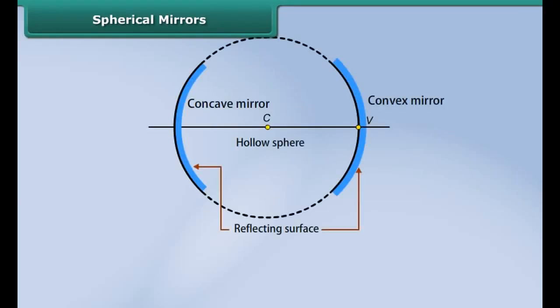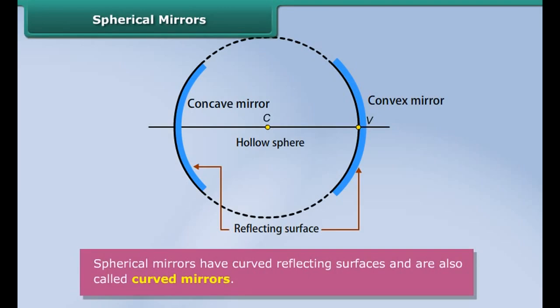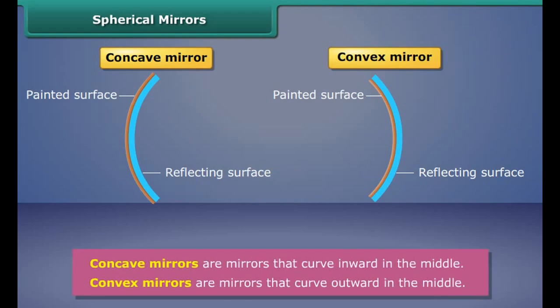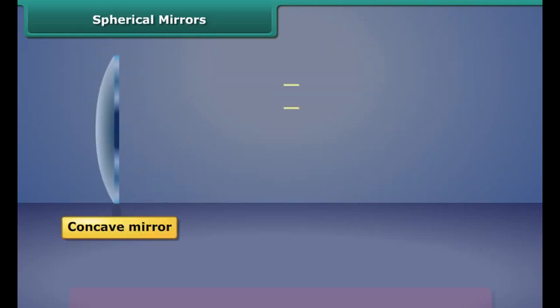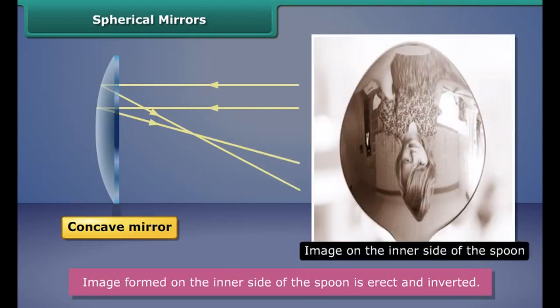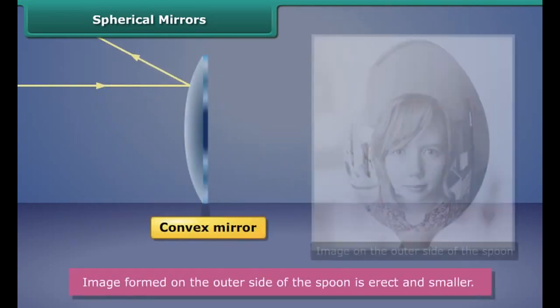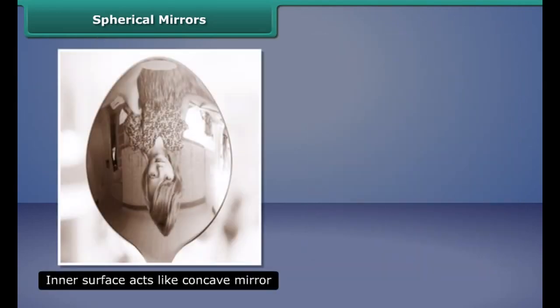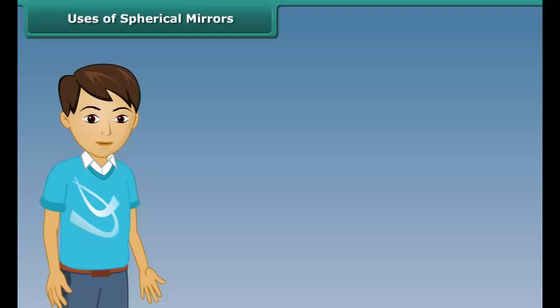Spherical mirrors have curved reflecting surfaces and are also called curved mirrors. There are two kinds of spherical mirrors: concave mirror and convex mirror. Concave mirrors curve inward in the middle, whereas convex mirrors curve outward in the middle. Concave mirrors reflect light from their inner surface, like the inside of a spoon. Convex mirrors reflect light from their outer surface, like the outside of a spoon.